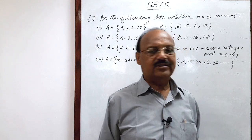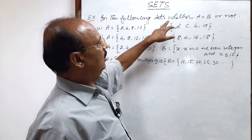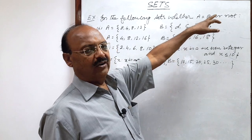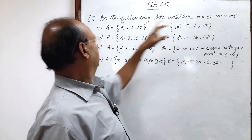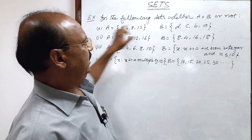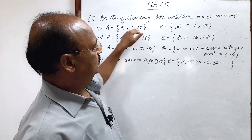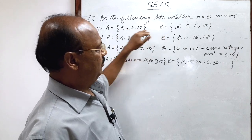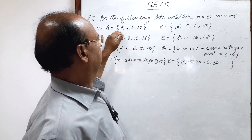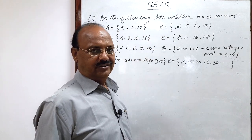Very easily we can solve this question. Here the question is: in the following sets, whether A is equal to B or not. In every part of this question there are two sets A and B, and we have to mention whether these two sets A and B are equal or not.